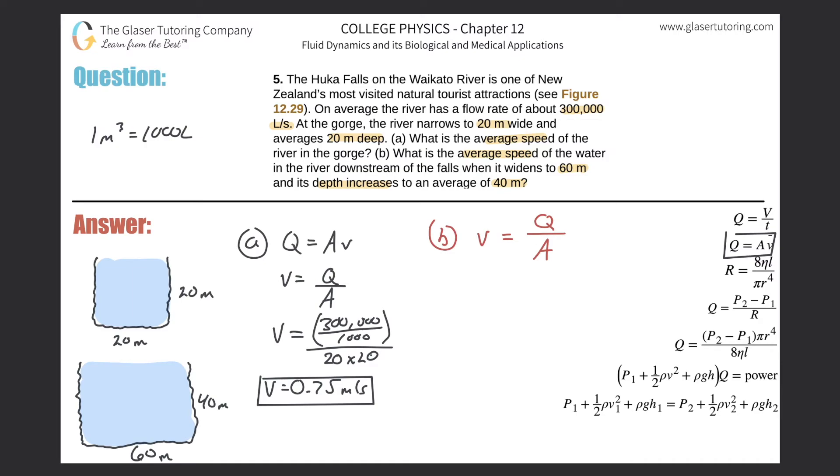We have the velocity equal to that volume flow rate of 300,000. Remember, you've got to get that into cubic meters and then divide that by the area, which is now 60 times 40. So the velocity is 300,000 divided by 1000, then divide that whole thing by 60 times 40. We get 0.125 meters per second.